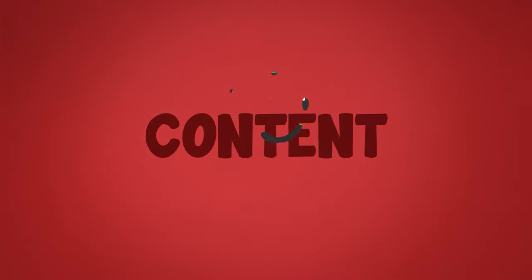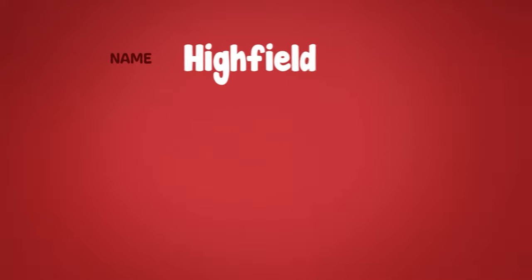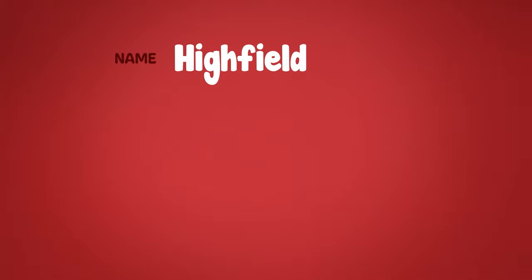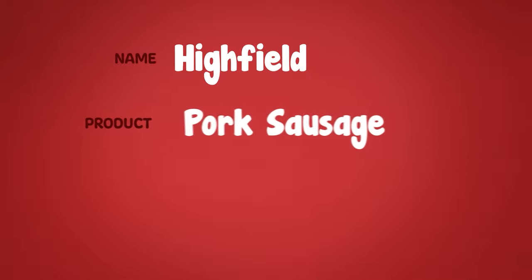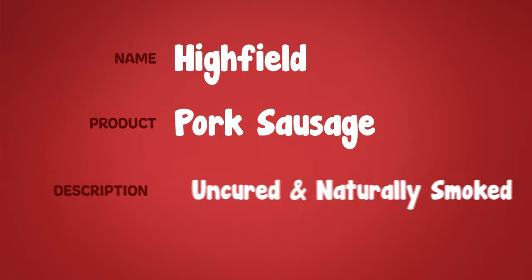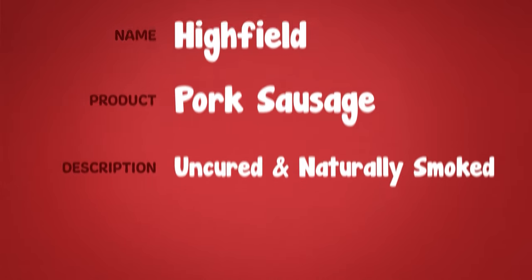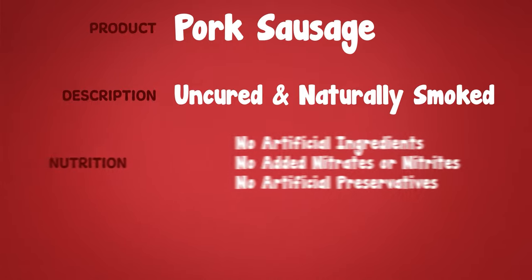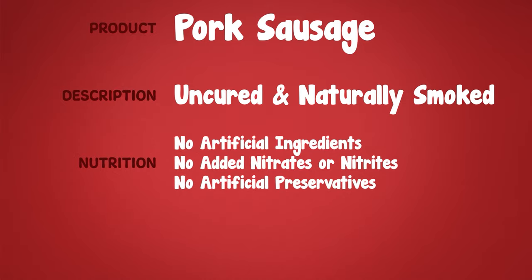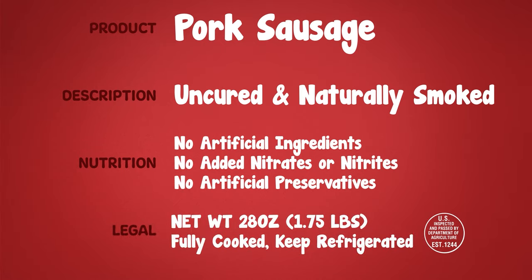Just to go over the content quickly: we've got the company name, Highfield; the product title, Pork Sausage; a small description saying these sausages are uncured and naturally smoked; a list of potentially harmful or undesirable ingredients that this product doesn't contain; and then some legal copy like the weight of the product, a notice to keep it refrigerated, and a seal of inspection.